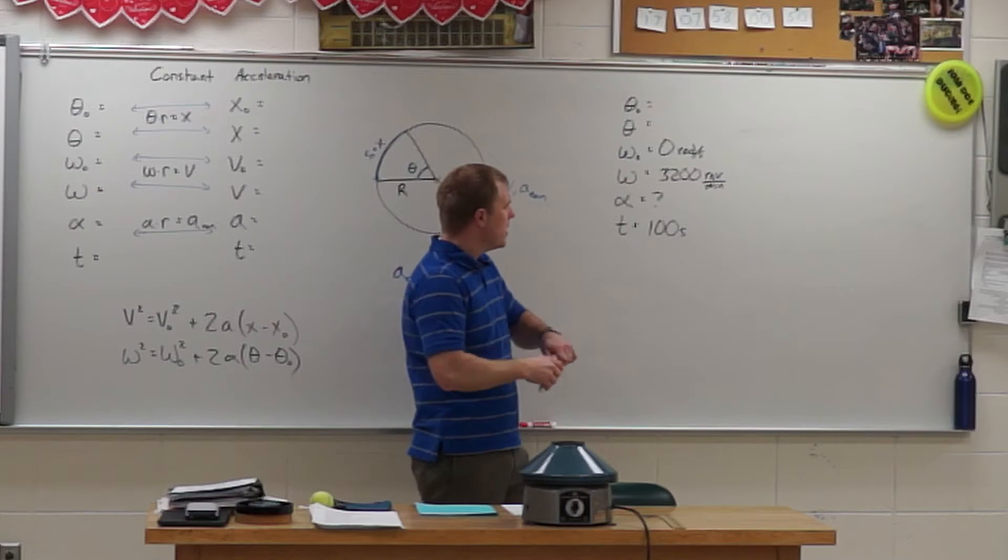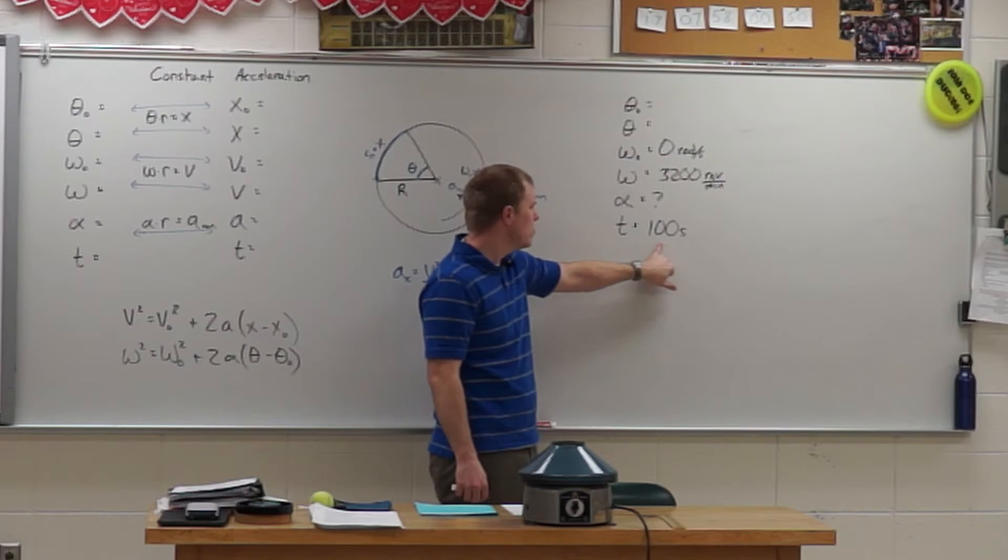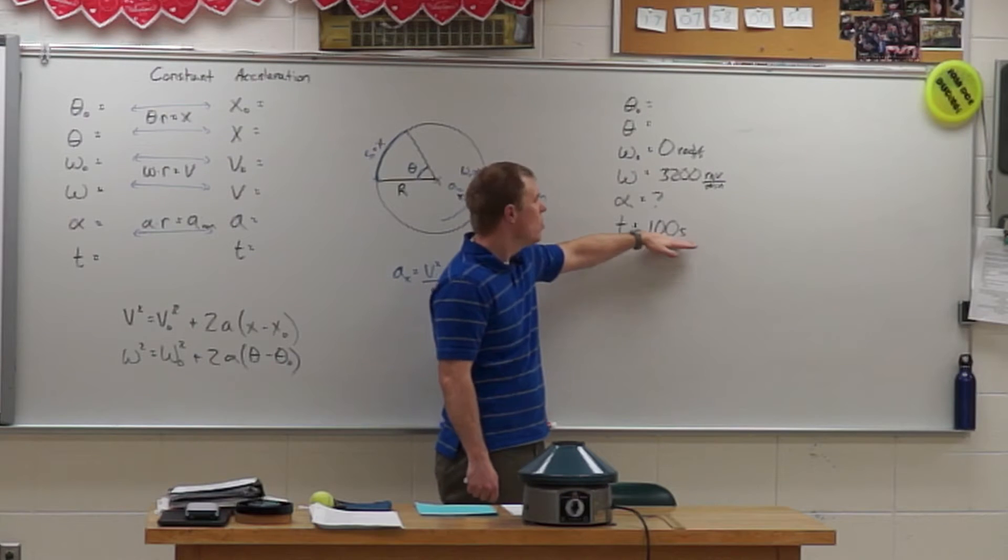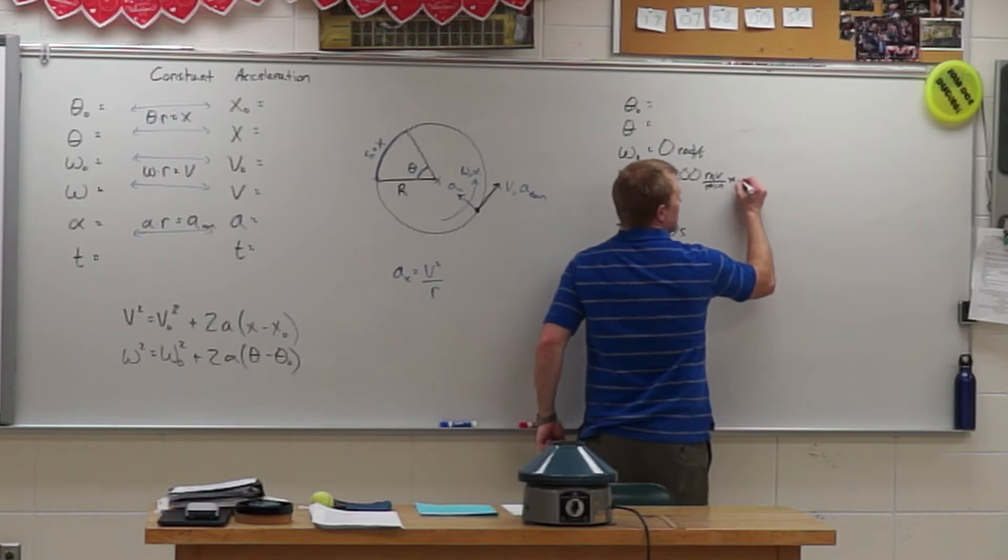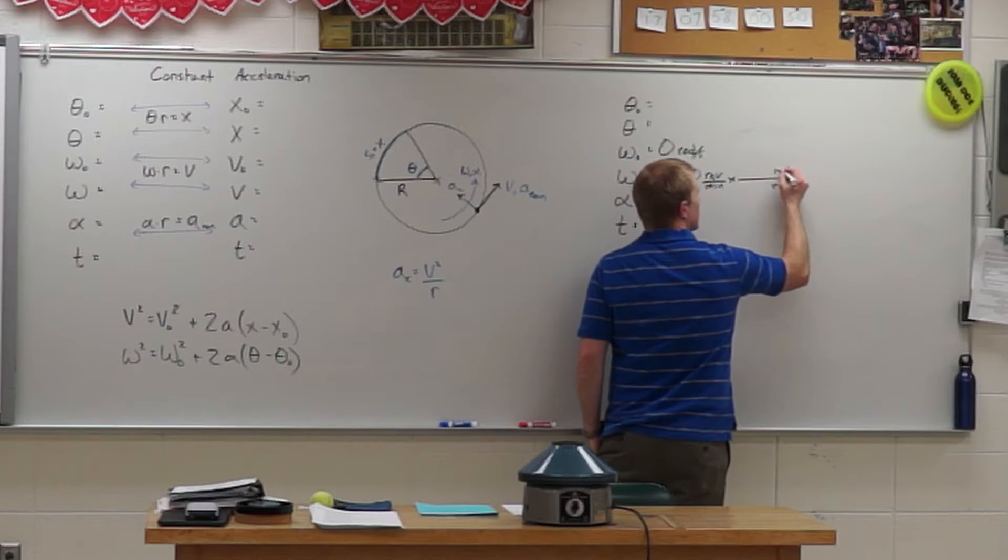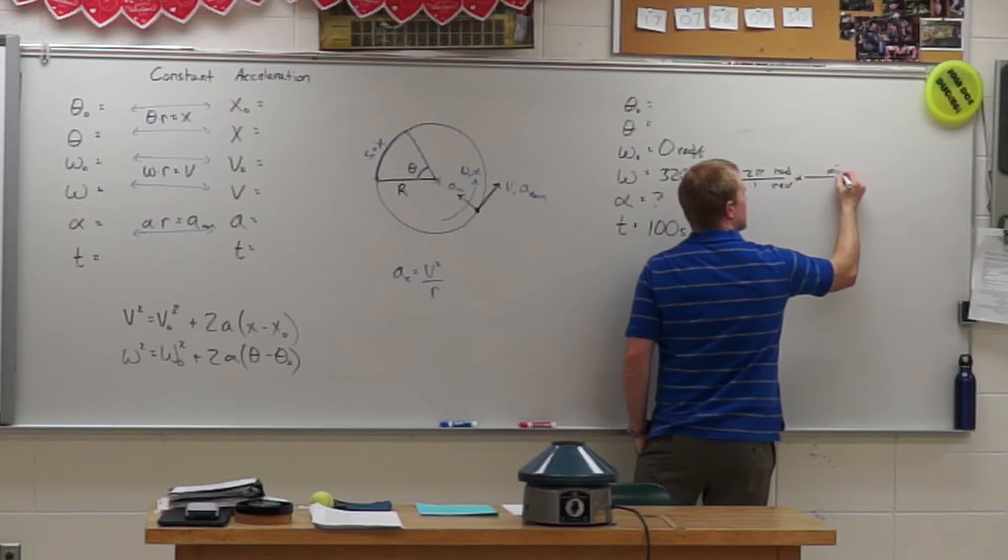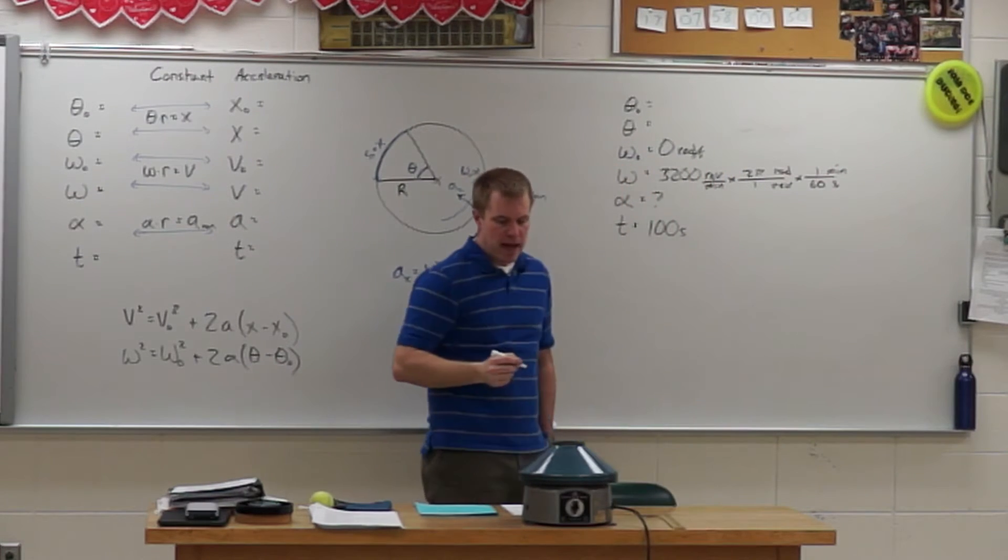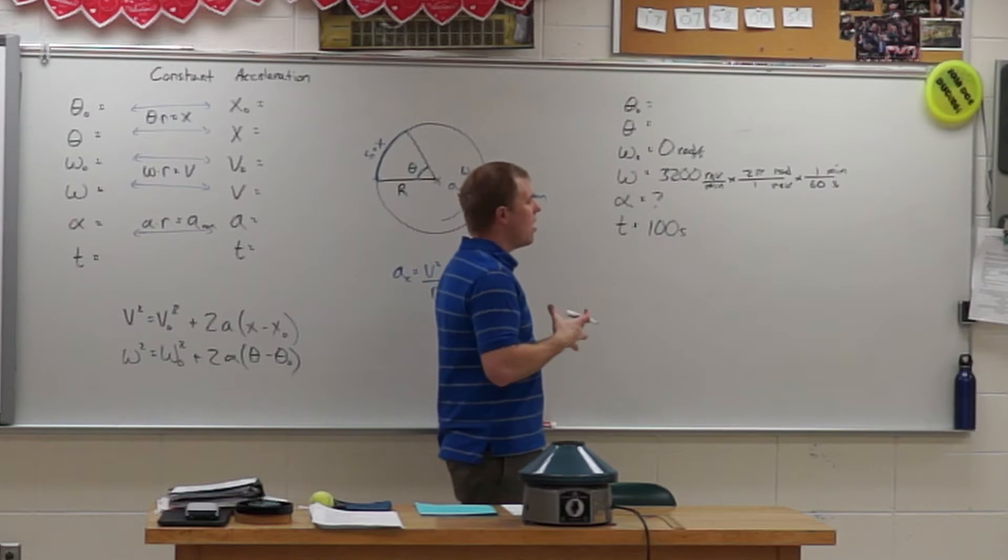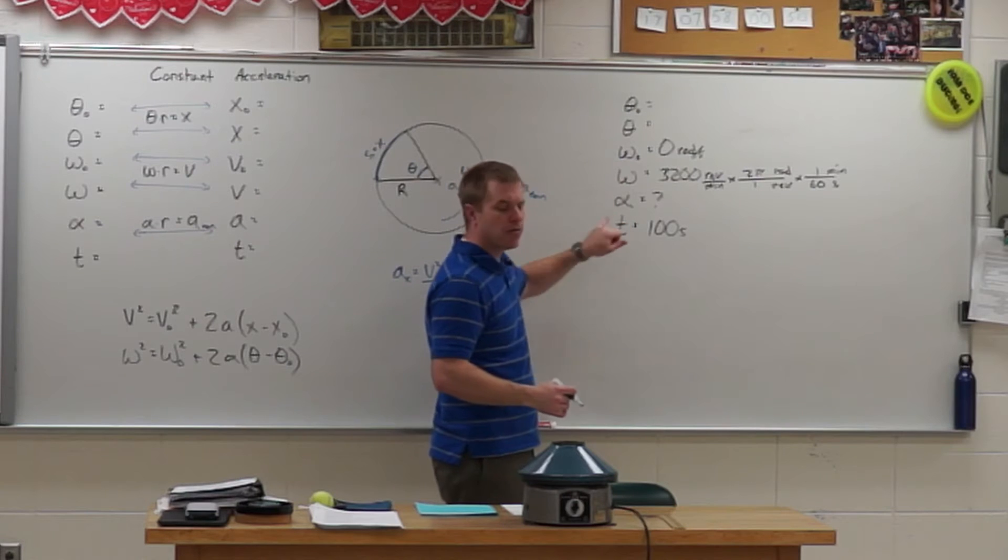Now, you might say revolutions per minute, that's not going to go well with seconds or radians. So what do we have to do? We have to convert that. So I have to get rid of revolutions and I have to go to radians. And there's 2 pi radians in one revolution. I have to get rid of minutes and go to seconds. And there's 60 seconds in a minute. So when I make this conversion, I'll be able to use that value for omega to solve for alpha.